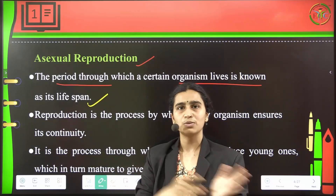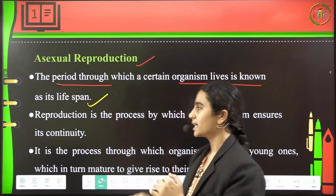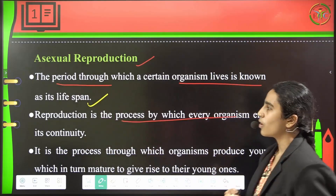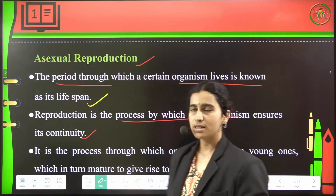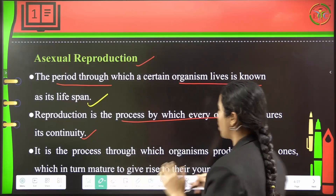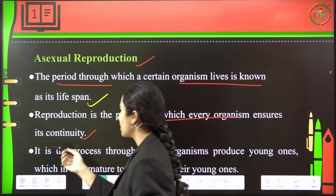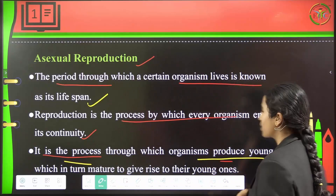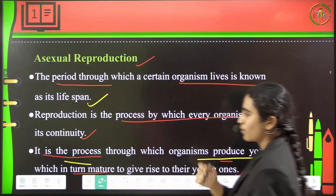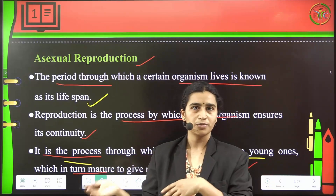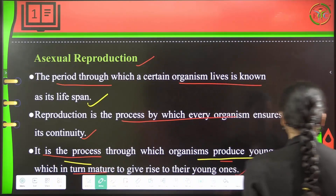Parents will give birth to the younger ones and their generations will go on. It is specifically considered as the process where every organism will continue their species — may be humans, microbes, plants, or animals, bigger to smaller organisms. All these will continue their species through the reproduction process. Parents give birth to us, we give birth to our offspring, and it goes on — this is how reproduction continues the species generation to generation.